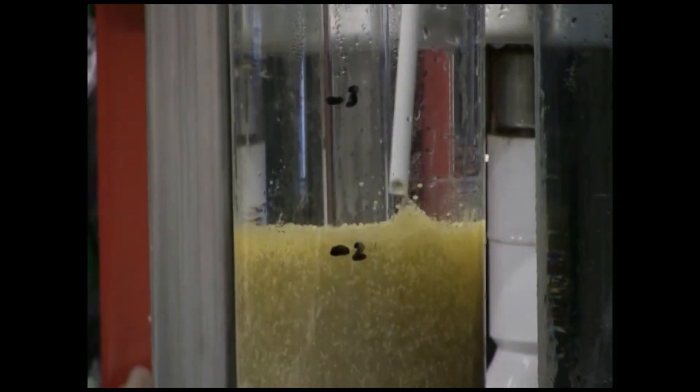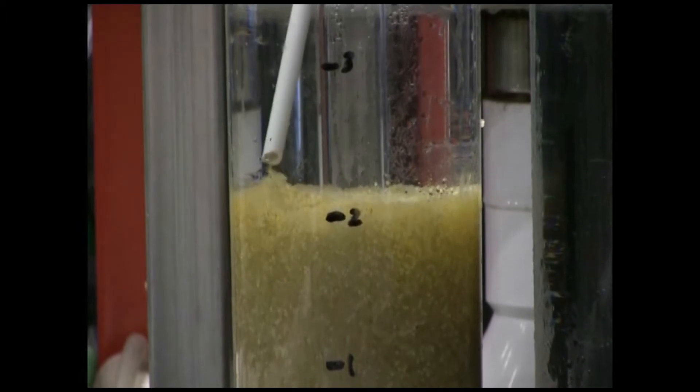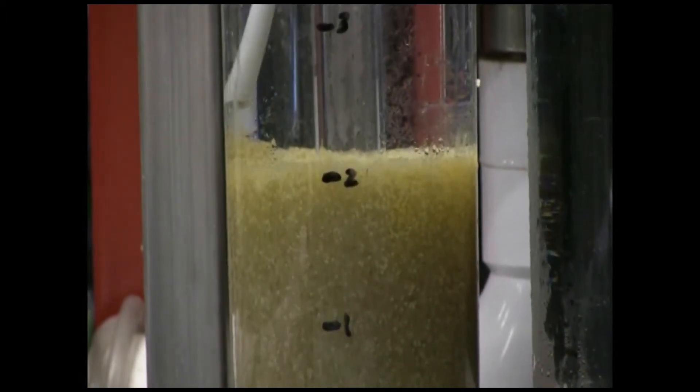The siphon tip should be kept a few centimeters above the layer of dead eggs. When the siphon is running, it will quickly lift the eggs into the tube.